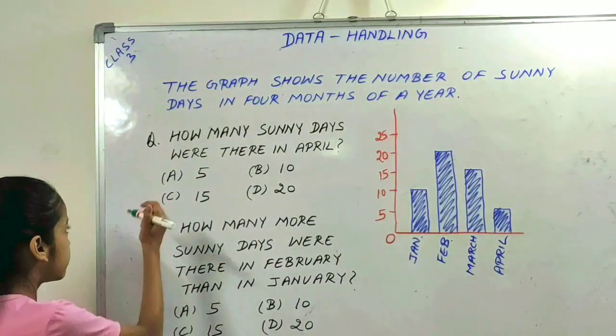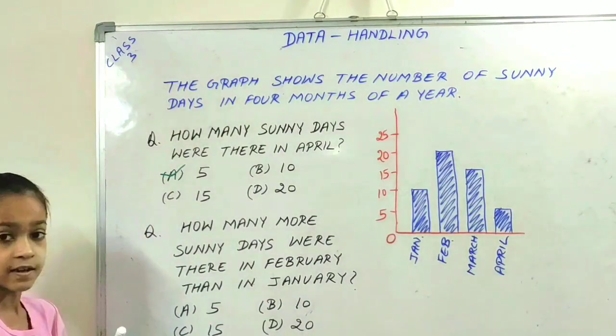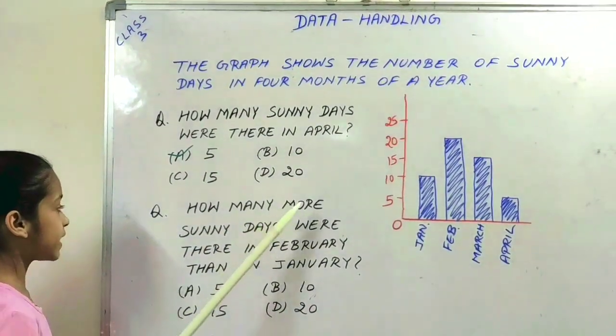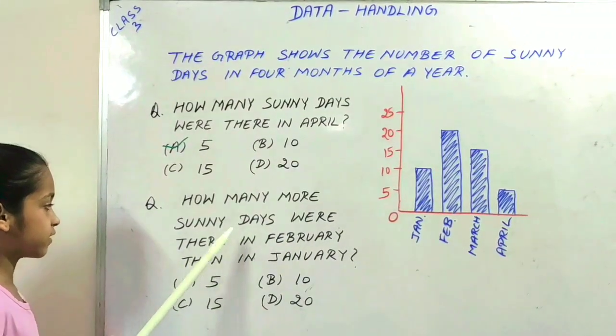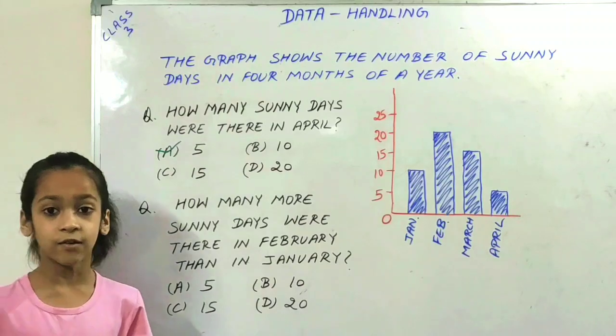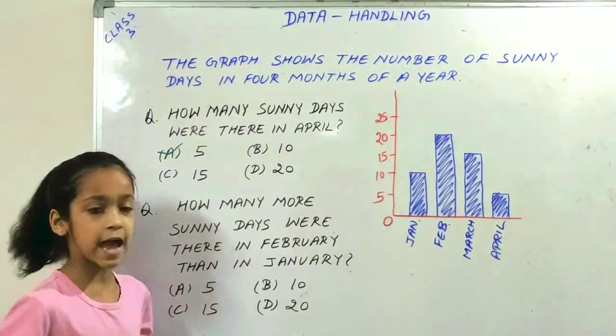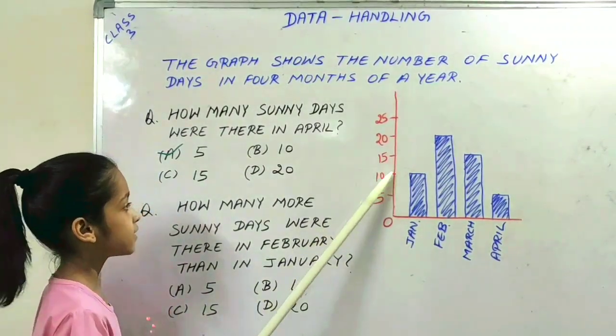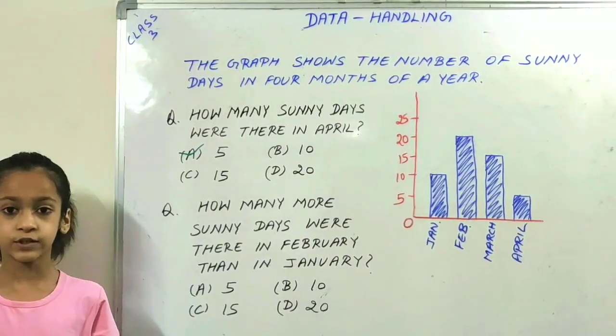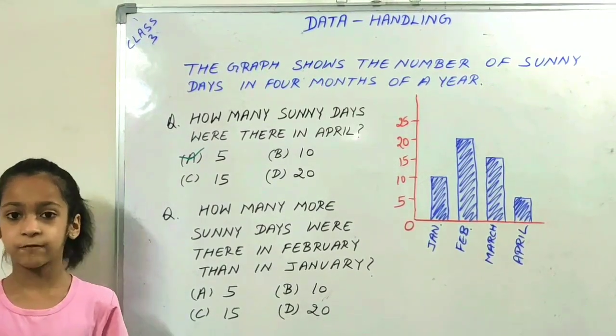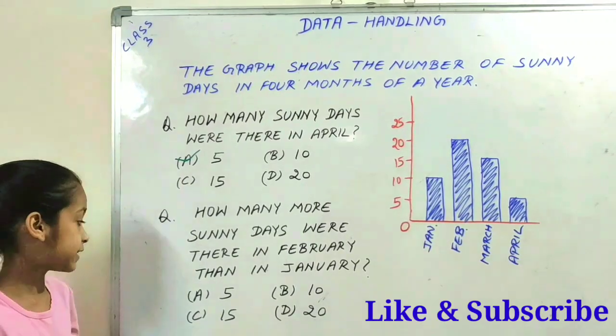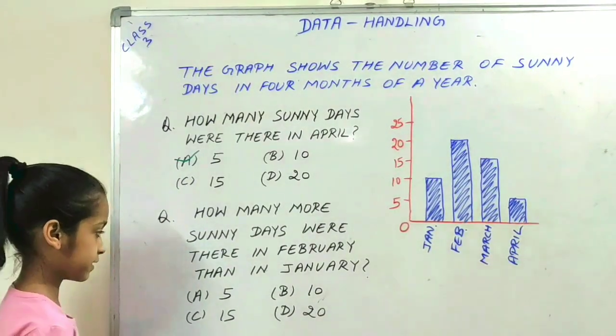Our next question is how many more sunny days were there in February than in January? February has 20 days and January has 10 sunny days. In this type of question, you can subtract 10 from 20. If we subtract 10 from 20, the answer is 10. Option B is the right option.